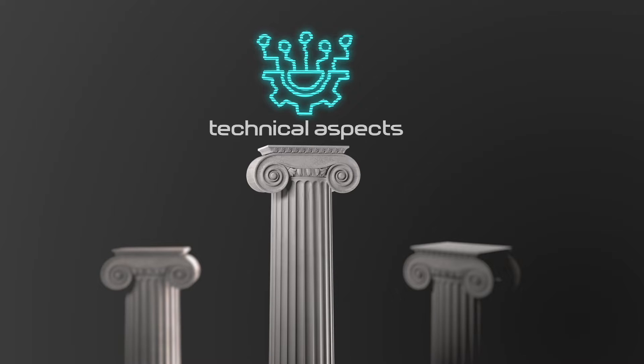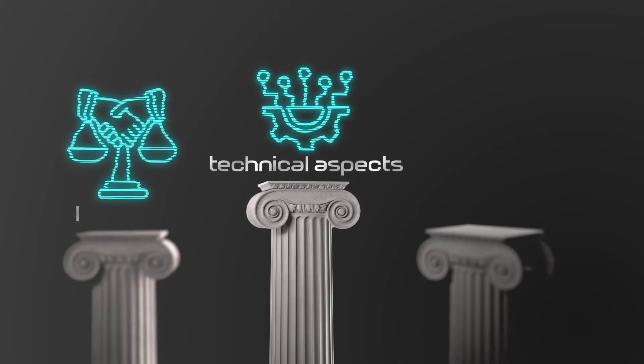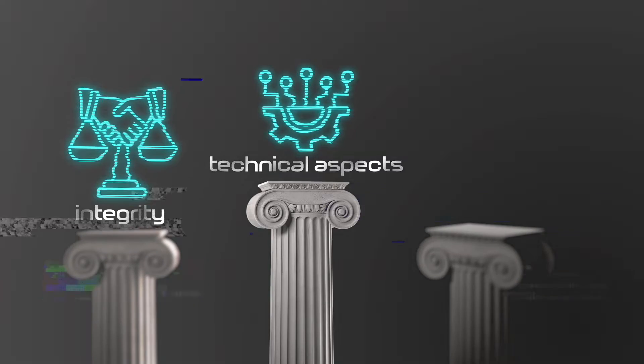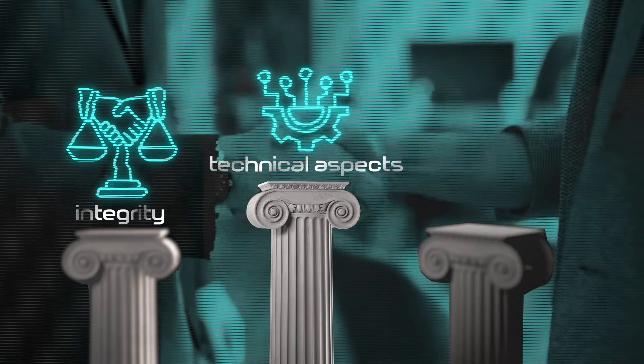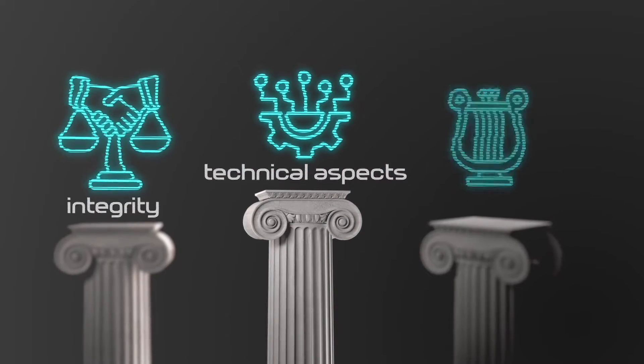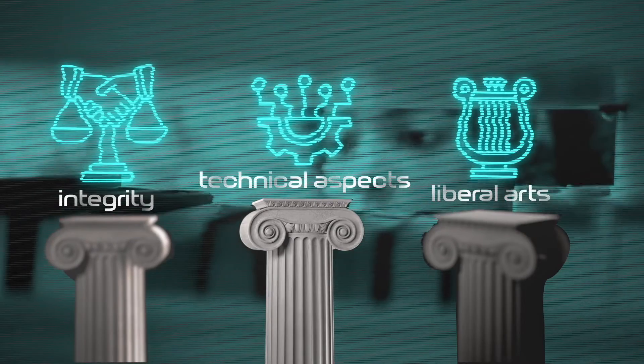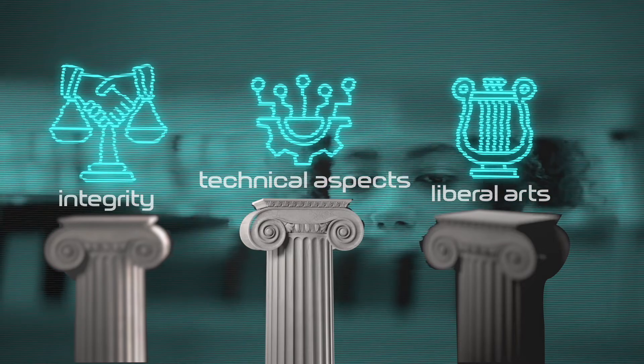Second, we need to teach integrity and to practice integrity, because these fields are so powerful that if they are used in a dishonest way they will do significant harm. And then finally, given the expanding sphere of computing, we need to depend upon our colleagues in the liberal arts to educate our students in the breadth of issues that will affect the trade-offs we make as we do AI, as we do data science, and apply them to ever more aspects of society.